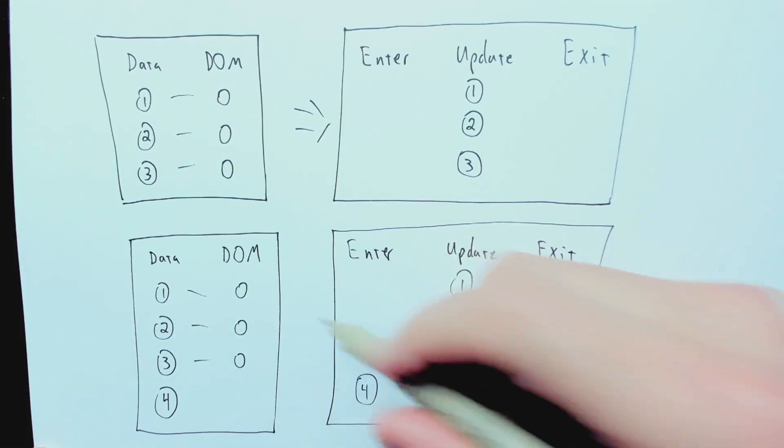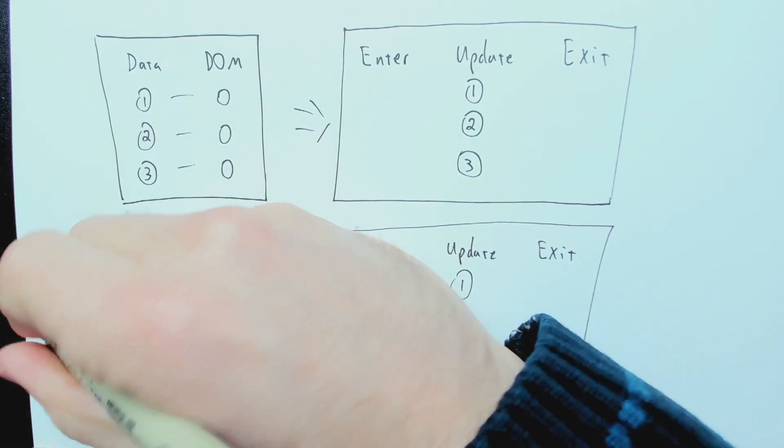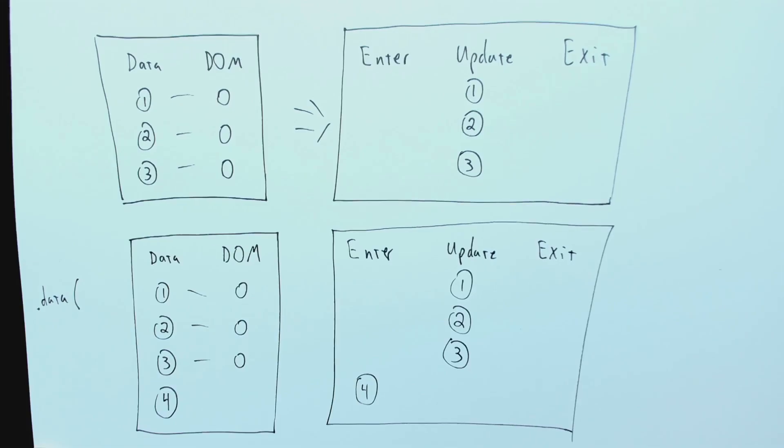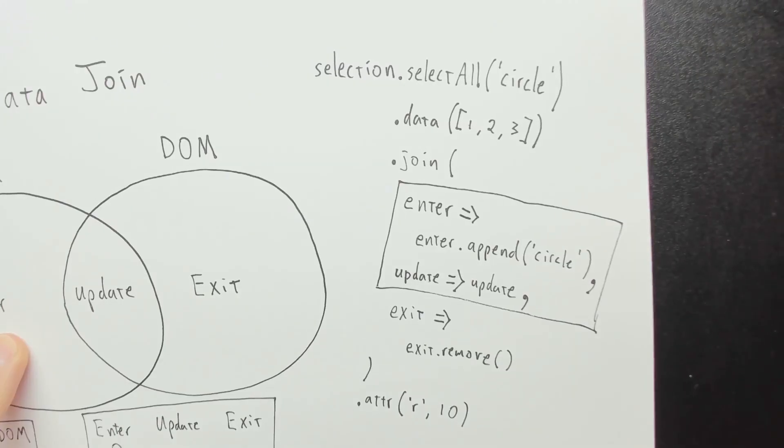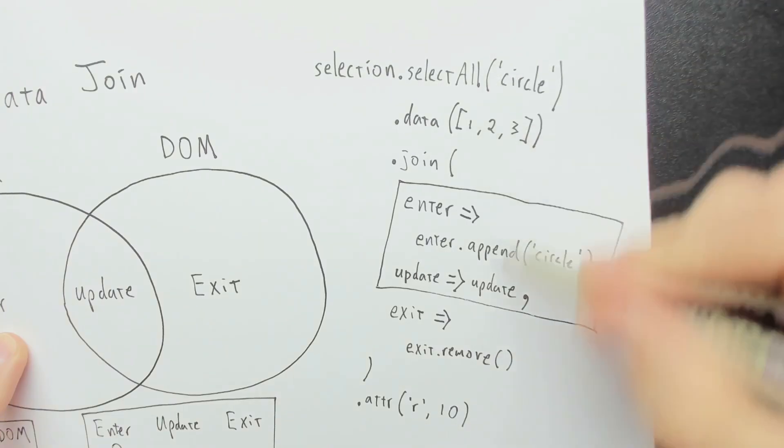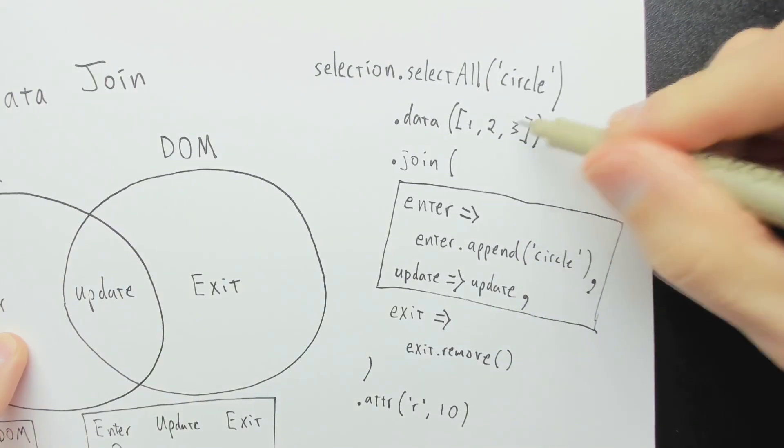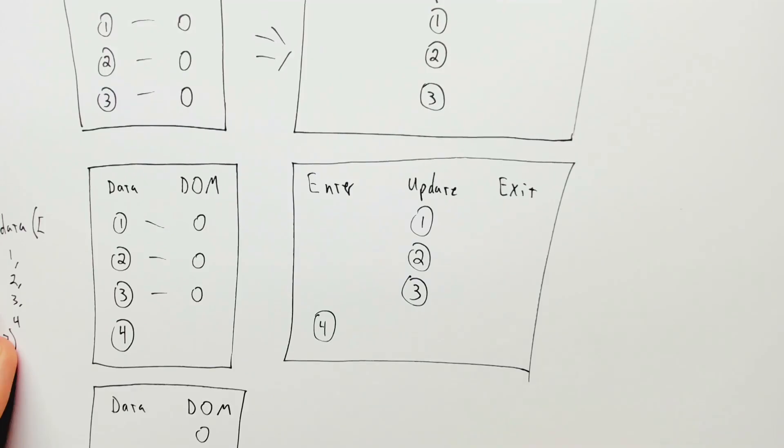And by the way, this is what would happen if you call .data with an array with 1, 2, 3, 4 in this code here. So if it were the same code running, but instead of 1, 2, 3, it was 1, 2, 3, 4, that would trigger this case here.